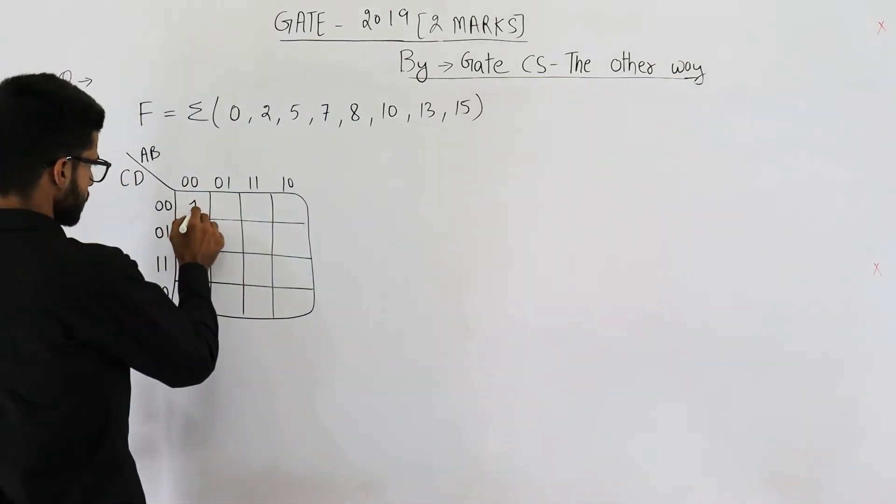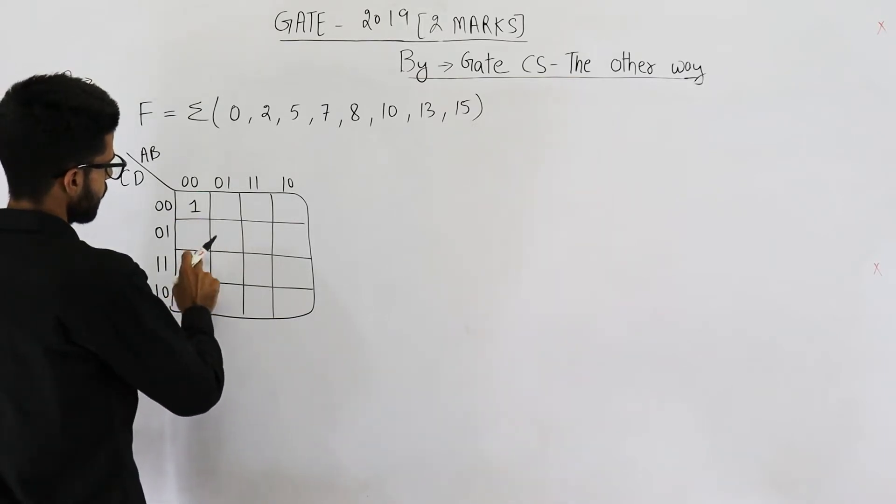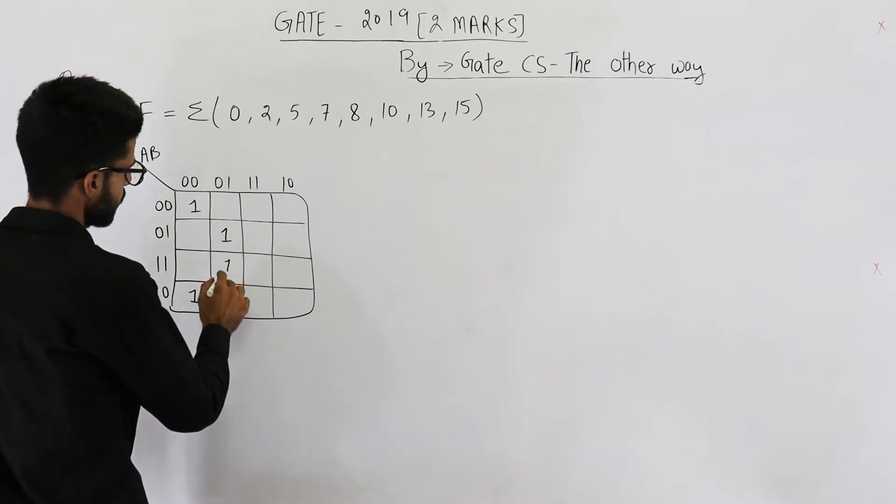2, 5, 7, 0, 1, 2, 3, 4, 5, so this is 5 and here we'll be having 7.